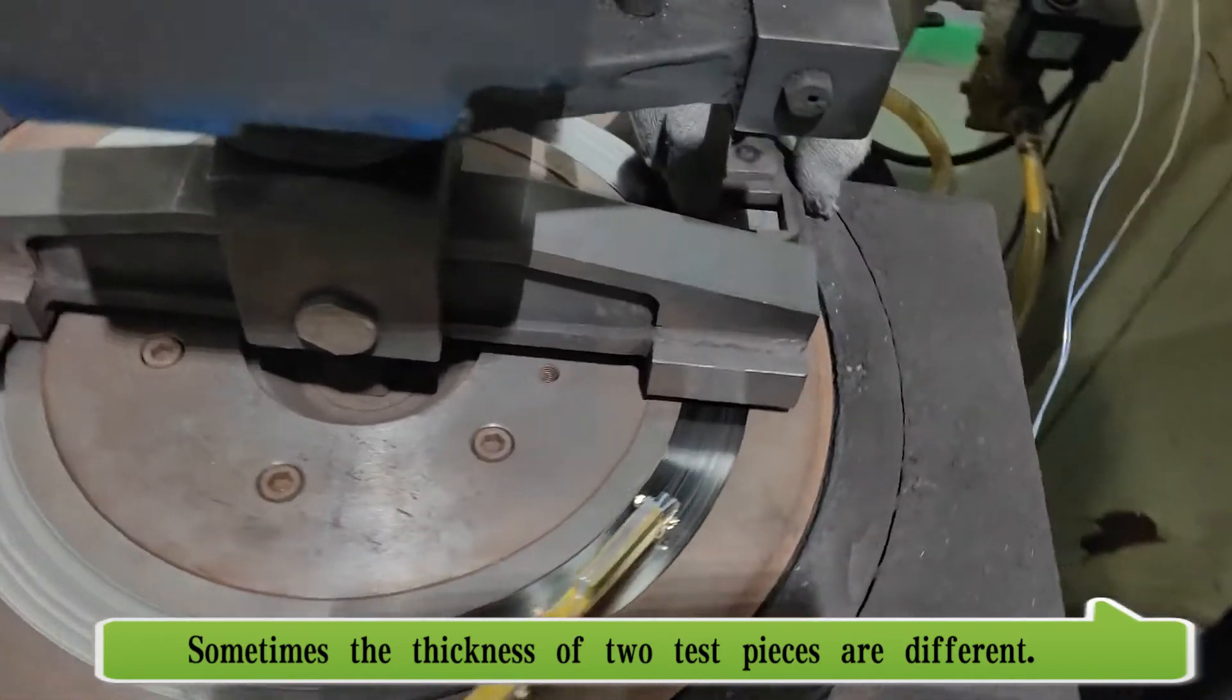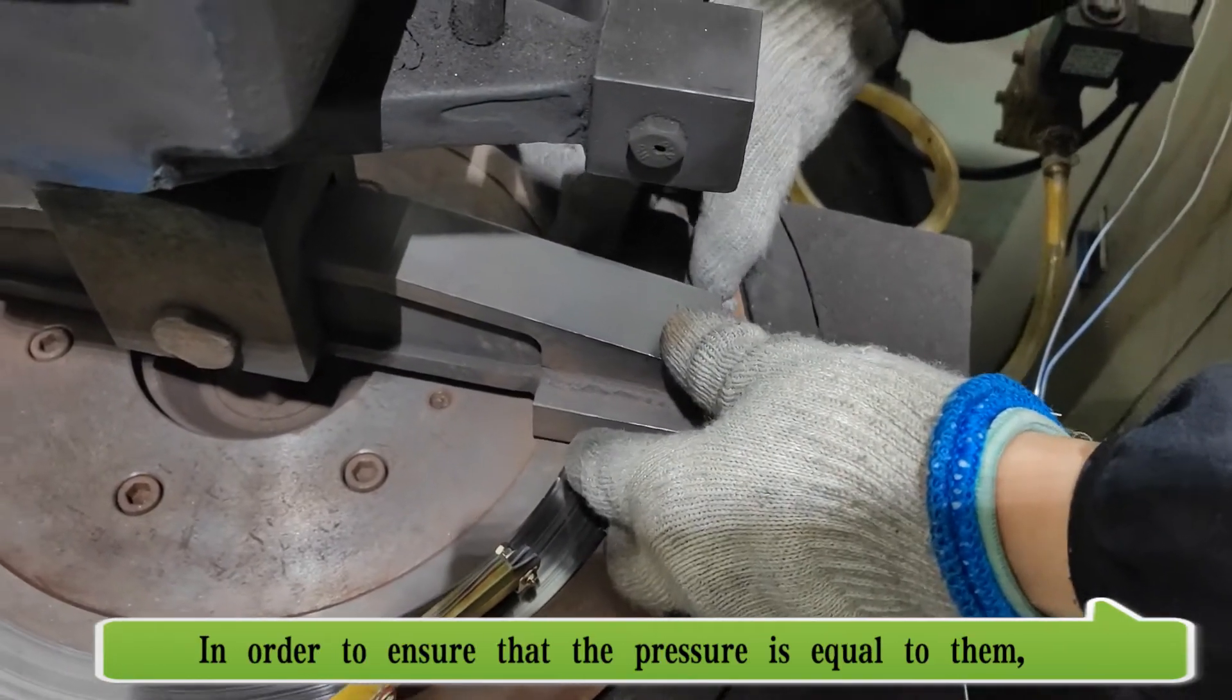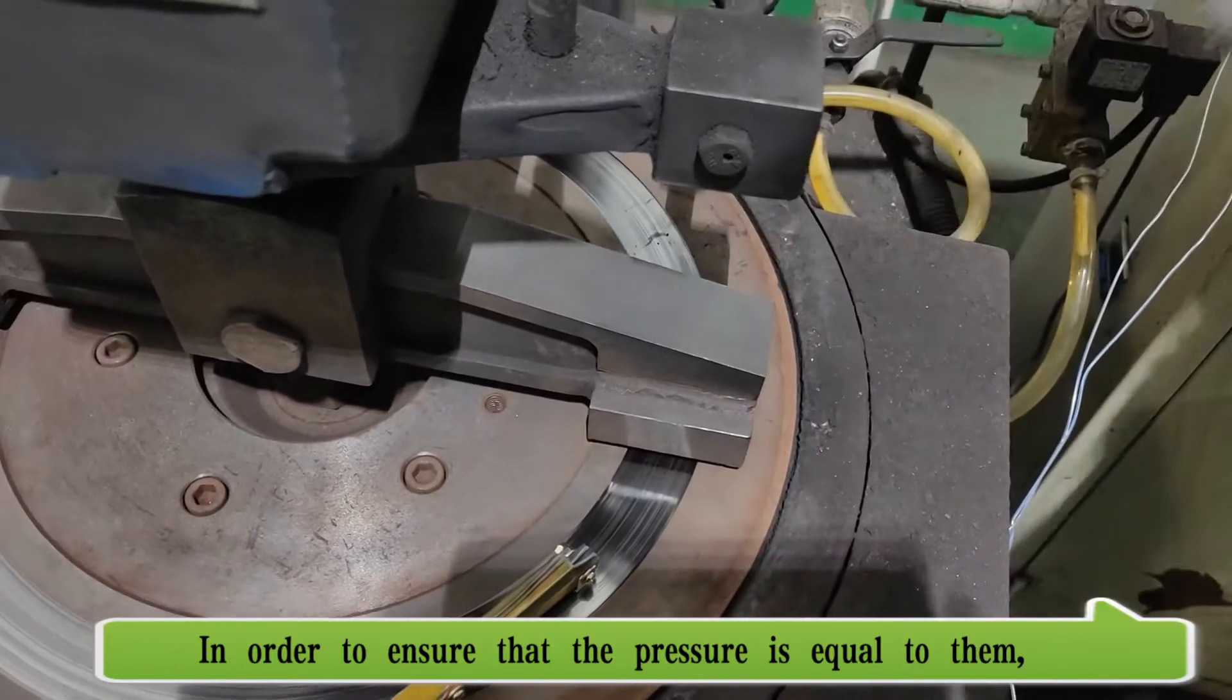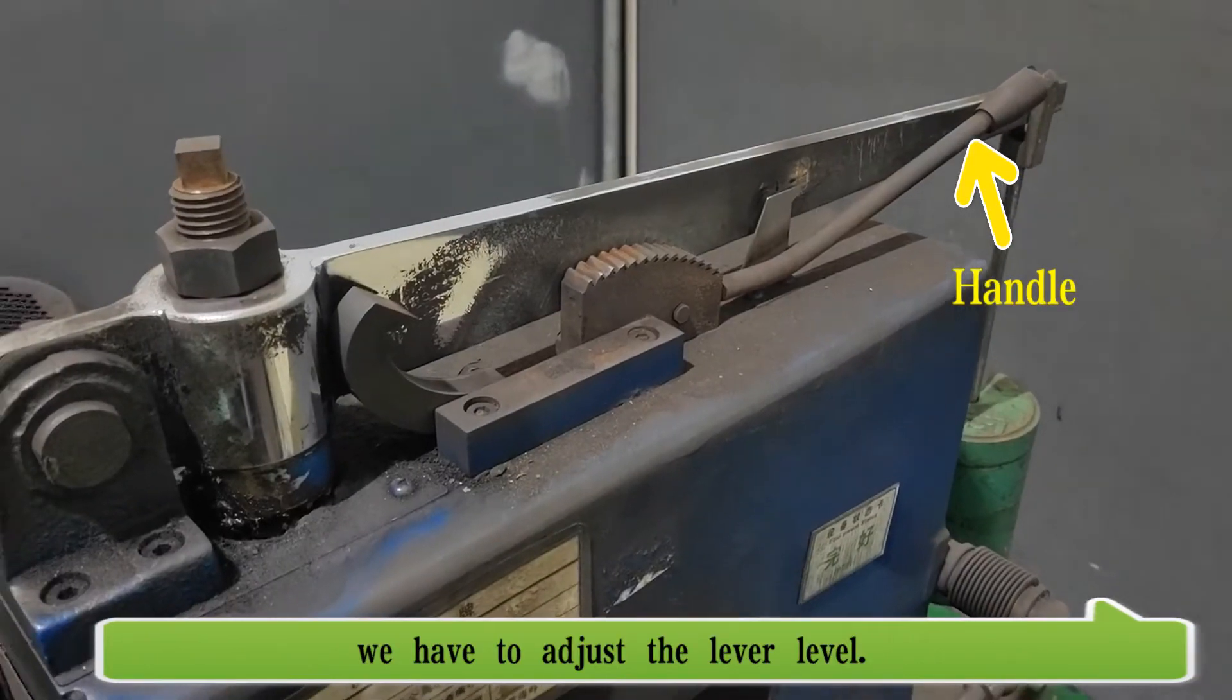Sometimes, the thickness of two test pieces is different. In order to ensure that the pressure is equal between them, we have to adjust the lever level.